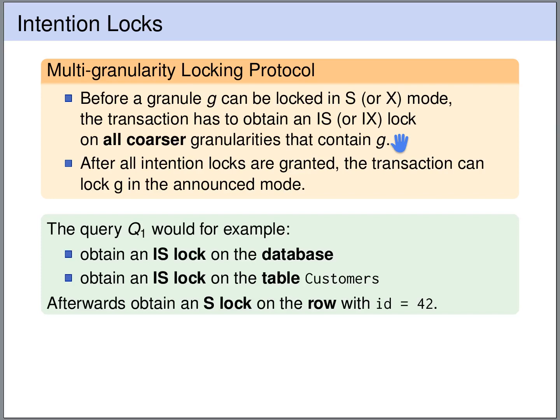Let's look at our first example: query 1, the row-selecting query that selects the customer with ID 42 — a single row from the customers table. This query would first need to obtain an intention shared lock on the database. Once granted, it needs to obtain an intention shared lock on the table. Only if both are granted can it obtain a shared lock on the row with ID 42.